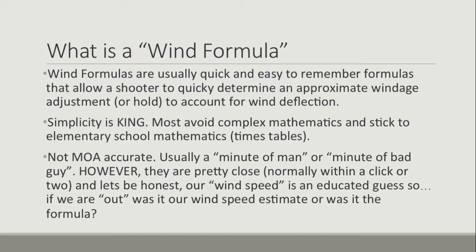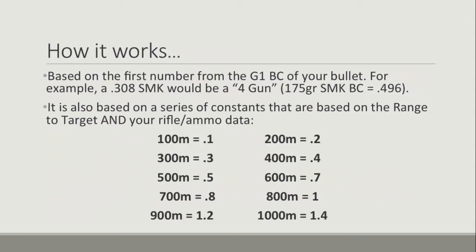As always with long-range shooting, wind is probably our worst enemy. Any wind speed that we apply to the formula is basically our best guess or an educated guess. So if we fire and we're slightly off, did we make a mistake with the wind speed estimate or was it the formula? The easiest way to explain it is to first look at how it works.